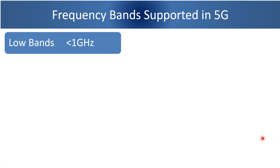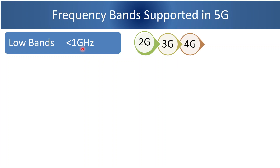Low bands are frequency bands which are less than 1 GHz. At present, all the existing technologies such as 2G, 3G, and 4G operate on these bands. That means these bands are already occupied by 2G, 3G, and 4G. 5G also supports low band.